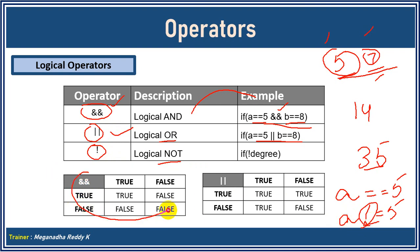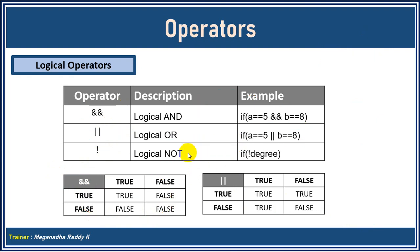These two that you see below are called truth tables. A truth table shows all possible outcomes. For logical AND: if both are true, the result is true. If one is true and the other is false, the result is false. False AND true is false, and false AND false is also false. So the AND condition will only succeed if both are true.